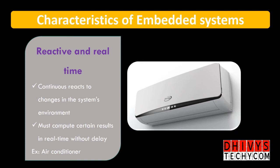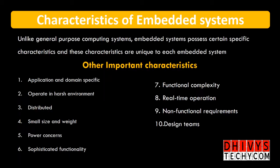These are the three major divisions of categories of embedded systems. We also have 10 other important characteristics of embedded systems, like application and domain specific, size, weight, design teams, non-functional requirements, and functional requirements.